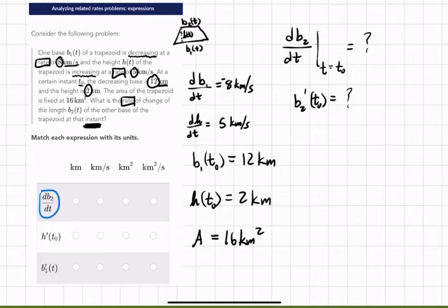Okay. So the first one is db sub two dt. So that's this guy right here. What would the rate be, or what would the units be of this rate? Now we know that we have kilometers and we know that it'd be per second because that's what the other guy is. He is kilometers per second. This one would also be kilometers per second.